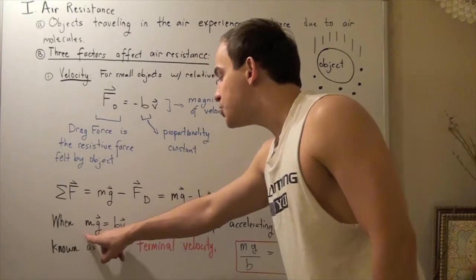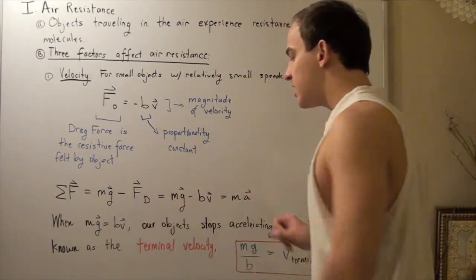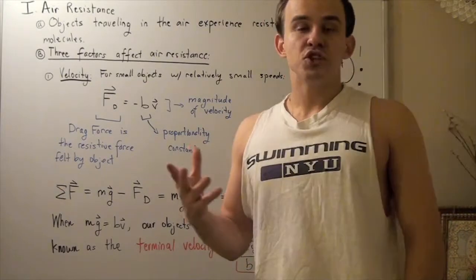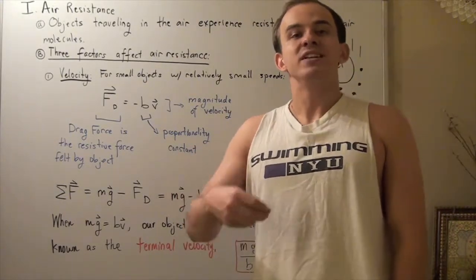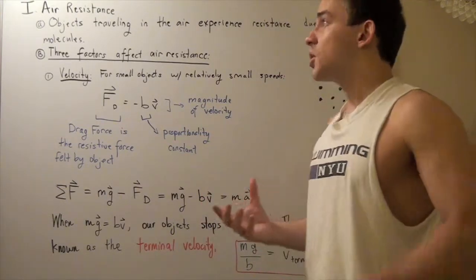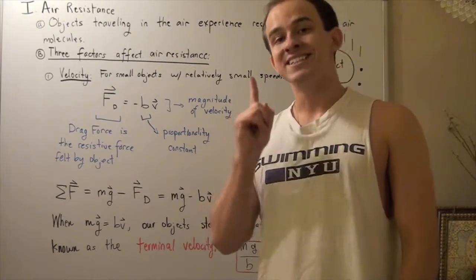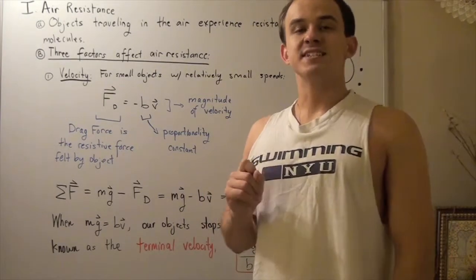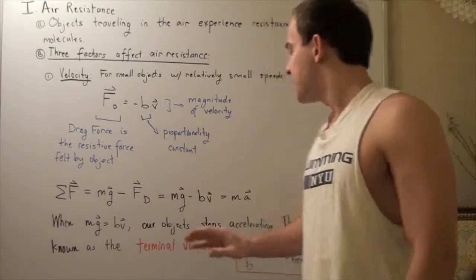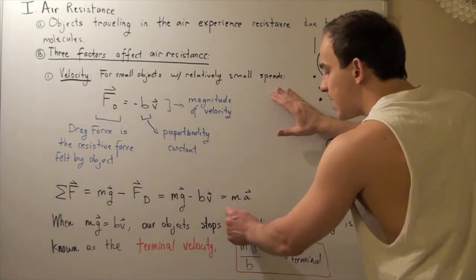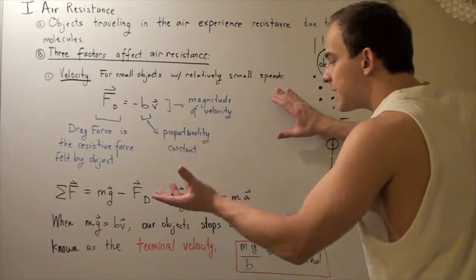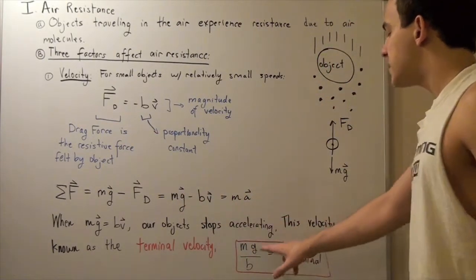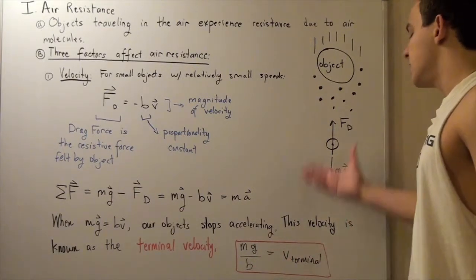When mg equals bv, our object stops accelerating. Every object will reach this terminal velocity, and when it does, the force of gravity equals the drag force, so the object continues to move but at a constant speed — a constant velocity — because it's no longer accelerating. The formula for terminal velocity: since ma equals zero, we have mg equals bv, so terminal velocity equals m times g divided by b.